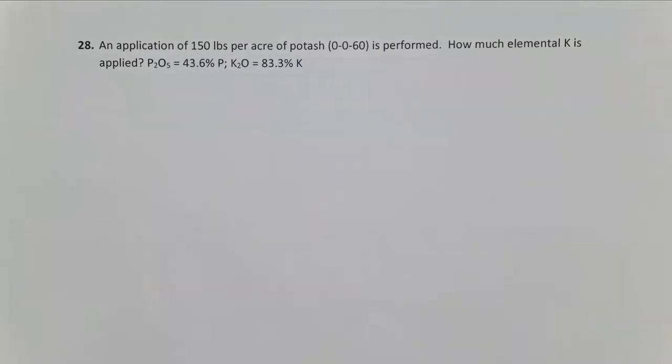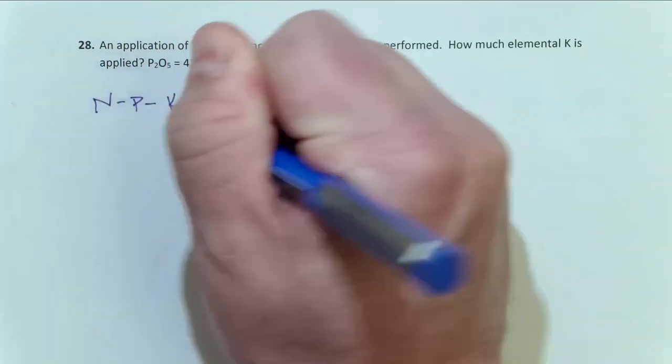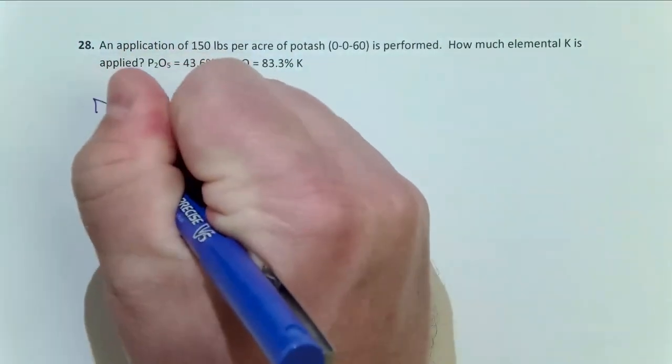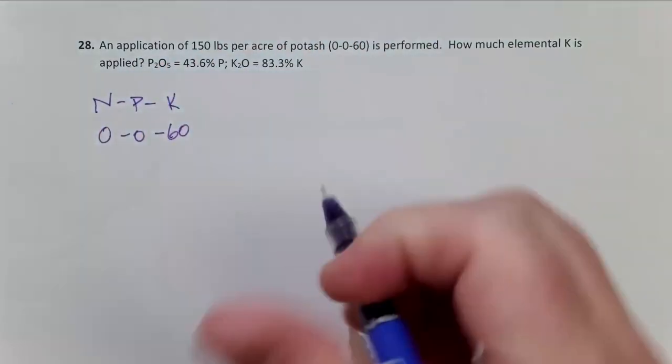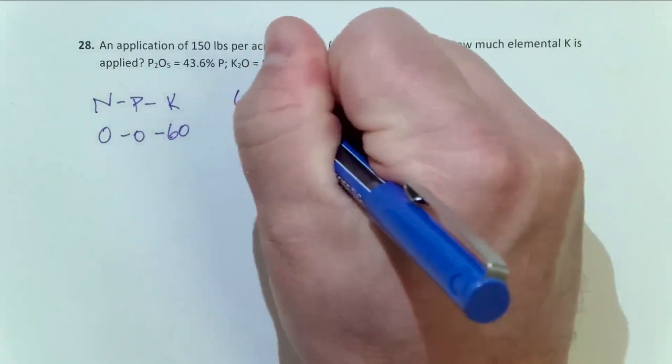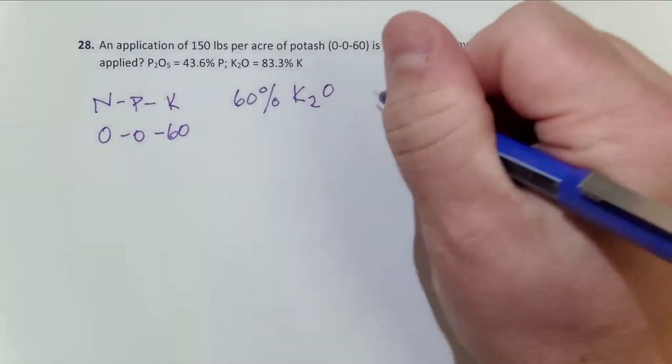We have our fertilizer rates N-P-K and we know this one is 0-0-60, so we know that it's 60% K2O. But we know because it's given to us here that K2O is 83.3% elemental K.